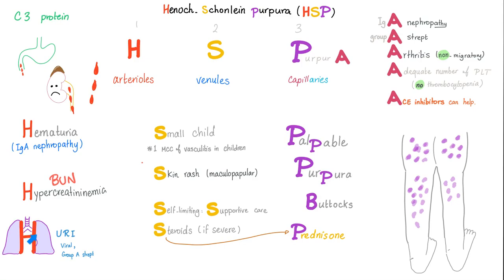HSP 1, 2, 3. Speaking of 3, there is C3 protein deposition. So we have IgA and C3 — don't ever forget that. It's also known as the C3 nephritic factor. Next letter: the S. S for small child, because this is the number one type of vasculitis in children. S for skin rash — specifically a maculopapular palpable purpura on the buttocks. When you biopsy it, you see the IgA antibody deposition inside the blood vessel in the skin. This is what's causing the rash.